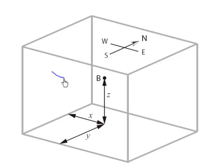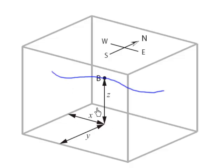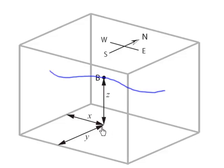Suppose we have a bumblebee buzzing around the room, and at this very instant the bumblebee is at point B, which is a distance x from the west wall of the room, a distance y from the south wall of the room, and a height z above the floor. We can completely describe the position of this bumblebee by these three numbers x, y, and z.